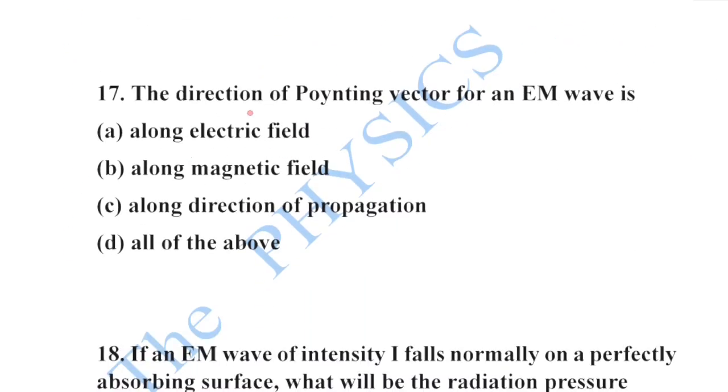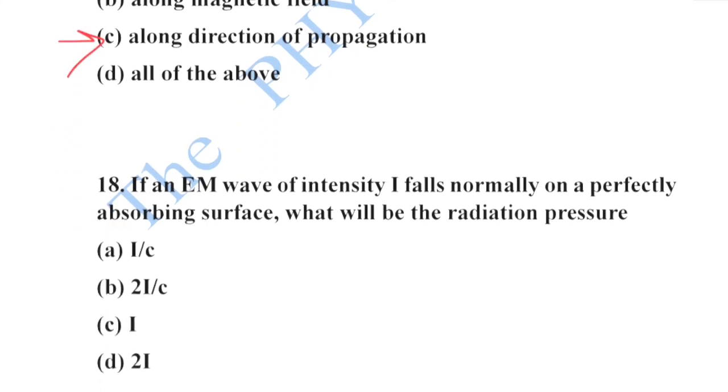Next: the direction of the Poynting vector for an electromagnetic wave is along the direction of propagation. Option C is your correct option.